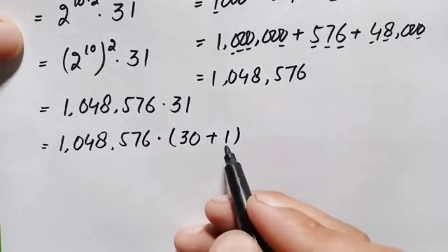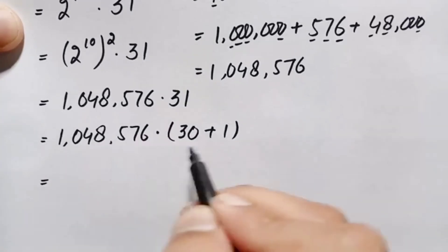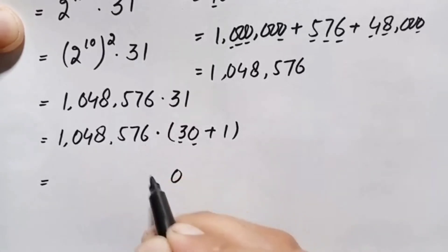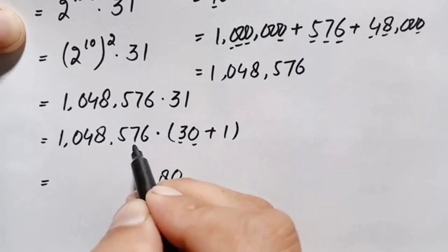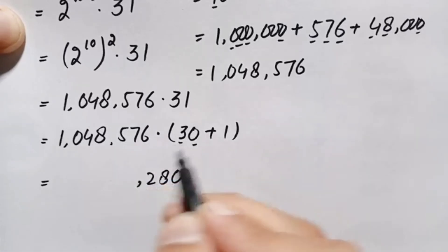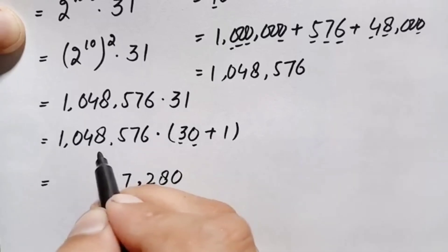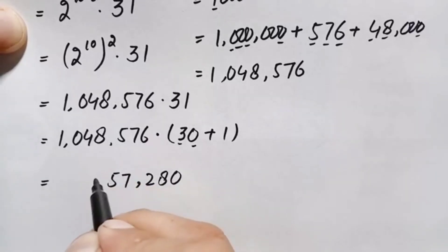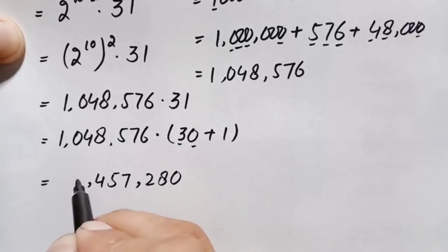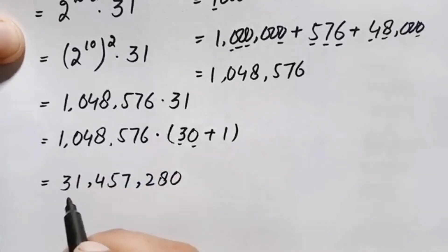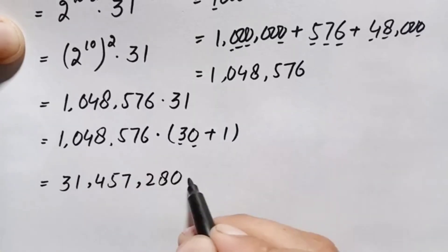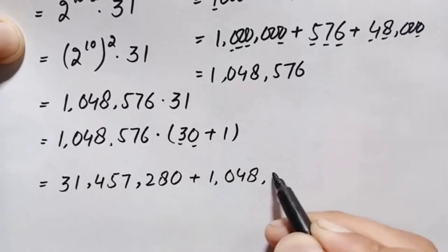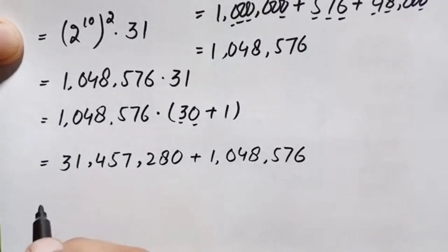Multiplying 1,048,576 by 30: first multiply by 3 digit by digit — 3 times 6 is 18, carry 1; 3 times 7 is 21 plus 1 is 22, carry 2; 3 times 5 is 15 plus 2 is 17, carry 1; 3 times 8 is 24 plus 1 is 25, carry 2; 3 times 4 is 12 plus 2 is 14, carry 1; 3 times 0 is 0 plus 1 is 1 — giving 3,145,728, then appending the zero for ×30 gives 31,457,280. Multiplying by 1 gives 1,048,576.